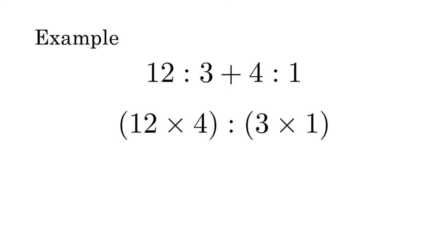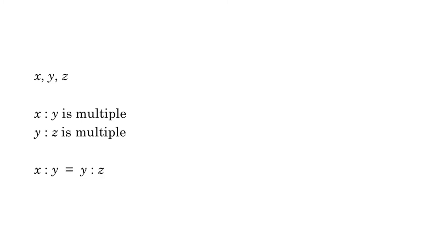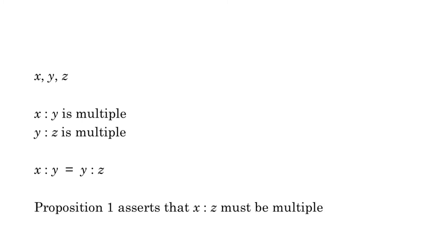The same applies to multiple ratios with different consequents. For example, take 12 to 3 and 4 to 1. 12 times 4 is 48, and 3 times 1 is 3. 48 to 3 is a multiple ratio that reduces to 16 to 1. Let's put this assertion in more formal terms. We talked about adding ratios together by finding a common middle term and creating a series of three numbers. Let's say we have a series of x, y, and z. The ratio between x and y is multiple, and the ratio between y and z is also multiple in the same proportion as x and y. Proposition 1 asserts that no matter what the actual values of these numbers are, the ratio between x and z — the outer terms — has to be multiple as well.